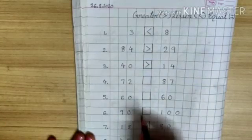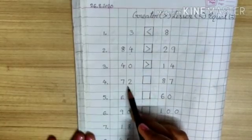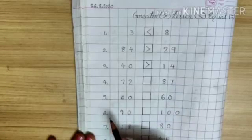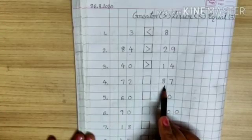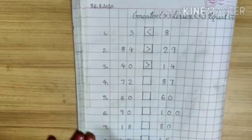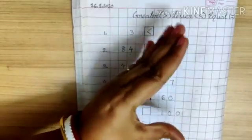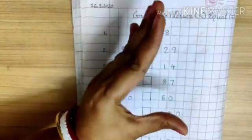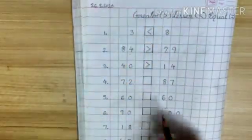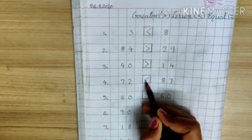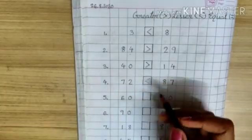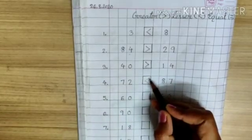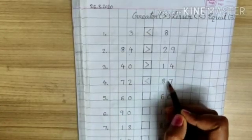Now next, number 4. Here we have number 72 and 87. Now tell me which number is bigger — 72 or 87? 87 is bigger. Then the crocodile will eat number 87, like this. So we have to put this sign. Crocodile will open his big mouth toward the big number.